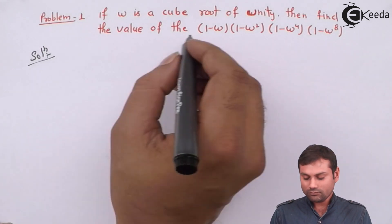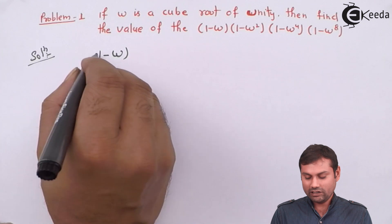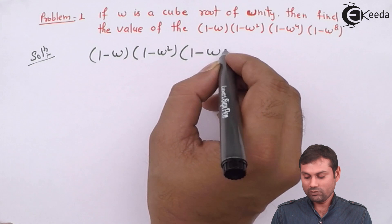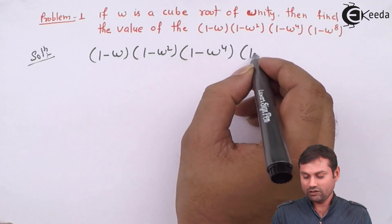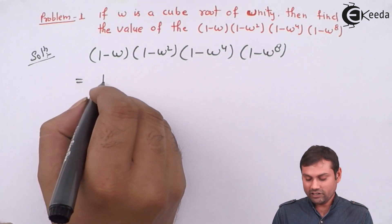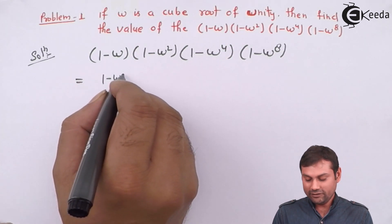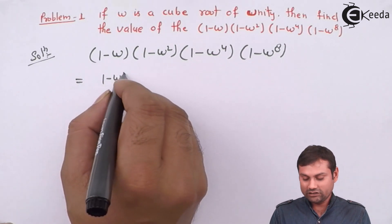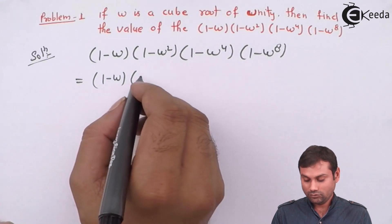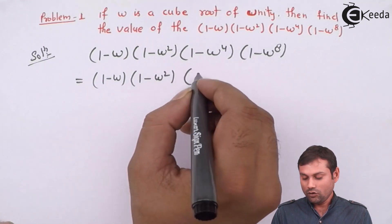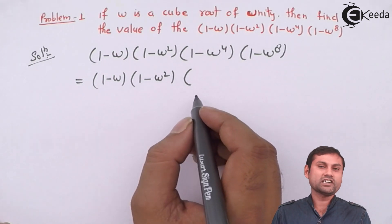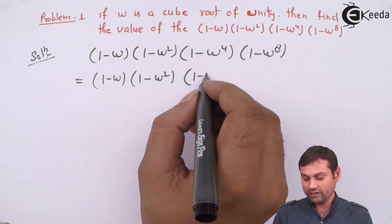The solution: we have (1-omega), (1-omega squared), (1-omega to the 4), and (1-omega to the 8). Keep (1-omega) as it is and (1-omega squared) as it is. For (1-omega to the power 4), we can write omega cubed times omega. Since omega cubed equals 1, this simplifies to (1-omega).